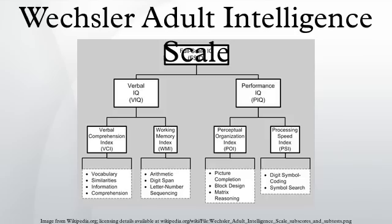Ichseler's scale is founded on his definition of intelligence, which he defined as the global capacity of a person to act purposefully, to think rationally, and to deal effectively with his environment. He believed that intelligence was made up of specific elements that could be isolated, defined, and subsequently measured.